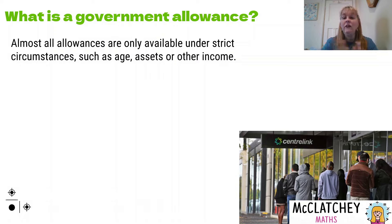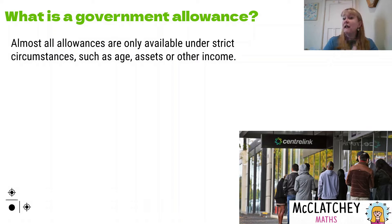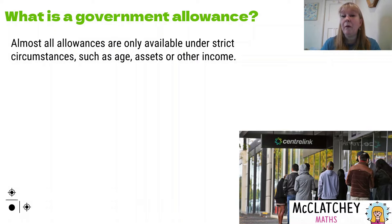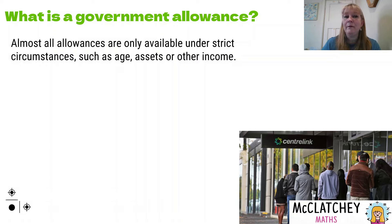Now, if you're going to attract a government allowance, they're only available to you under some very strict circumstances. And if you lie about these circumstances when you're applying for them, or even if you make mistakes, you'll end up with a debt and you'll have to pay interest on that debt. So you want to make sure that when you're setting up these allowances, that you get them right.